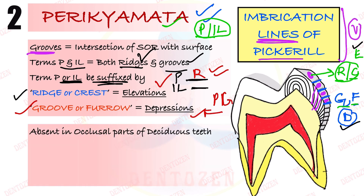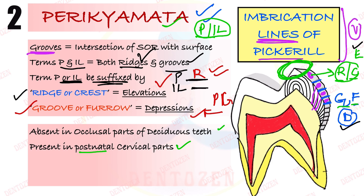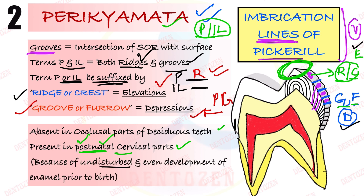These lines are absent in the occlusal parts of deciduous teeth. They are seen in the cervical parts, specifically the postnatal cervical parts — 'postnatal' meaning after birth. The cervical enamel develops after birth, and because of changes in the environment during that time, we can see incremental lines, and that is why we can see perichymata in the postnatal cervical parts of these teeth.